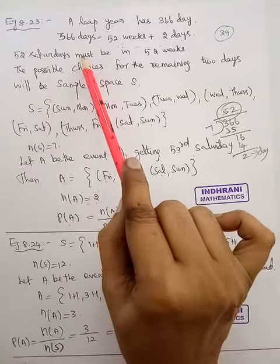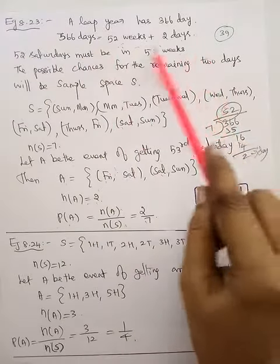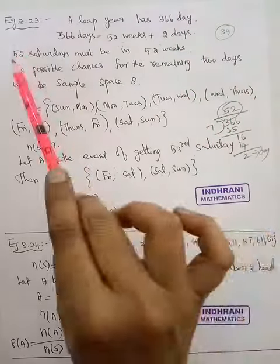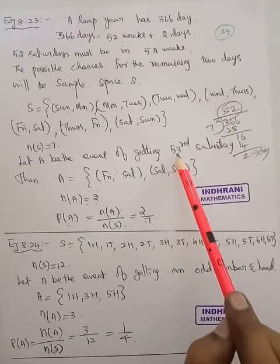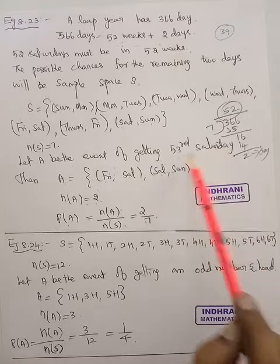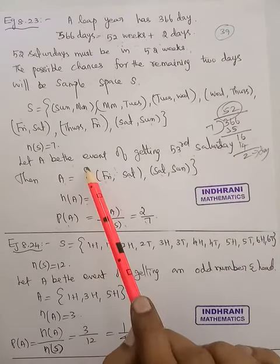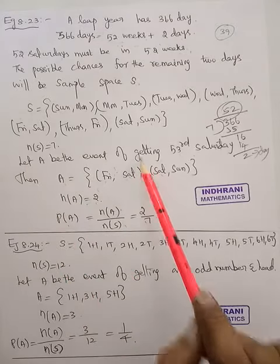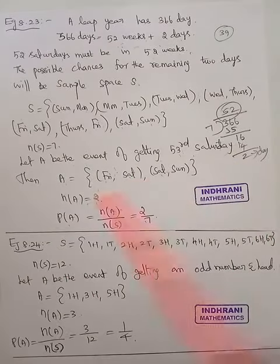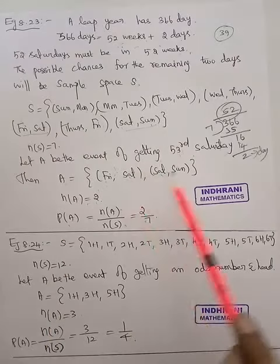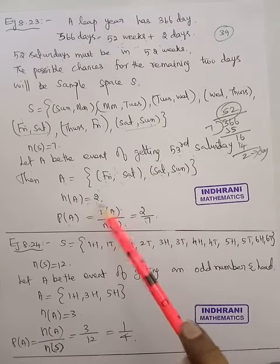So 52 Saturdays iles 52 weeks irukkku. 52 weeks iles 52 Saturdays irukkku. Sorry. 52 weeks iles 52 Saturdays irukkku. 1-1 Saturday, that is 53rd Saturdays irukkku. 53rd Saturdays irukkku. That is A by A. Let A be the event of getting 53rd Saturdays irukkku. That is a chance. Saturdays irukkku. Saturdays irukkku. So that is A. N of A is 2.